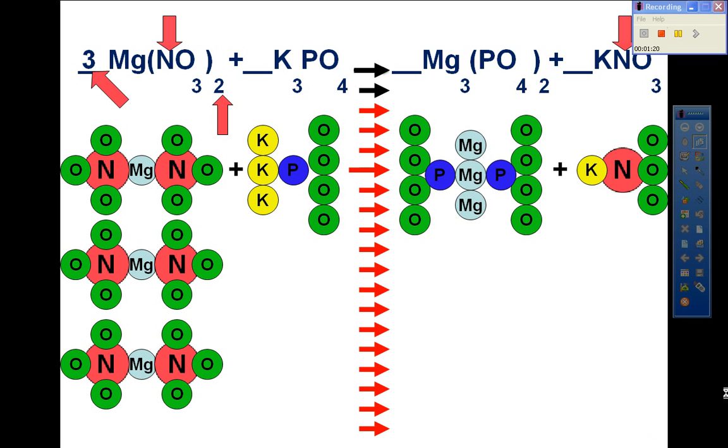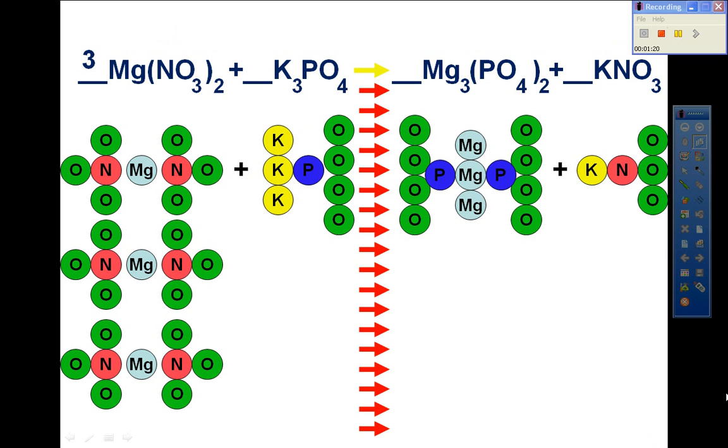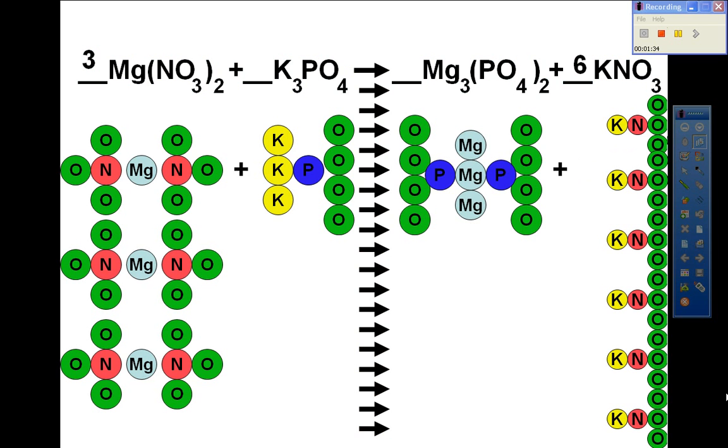So the only way that we can balance that out is to bring in a coefficient of six to place in front of the KNO3. This will give us six KNO3. We have to make those a little smaller so that they fit.